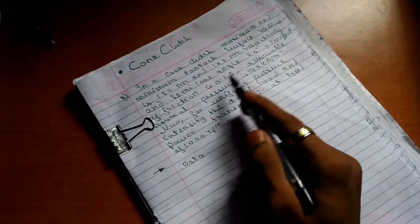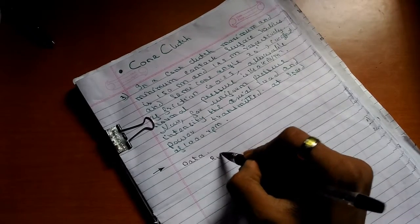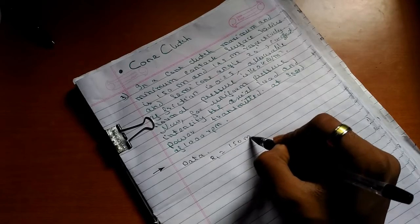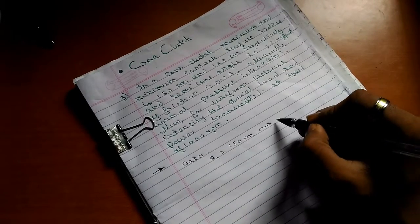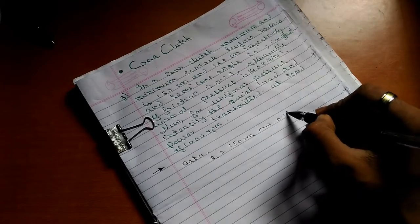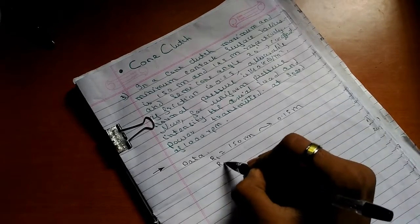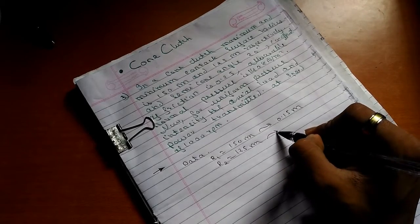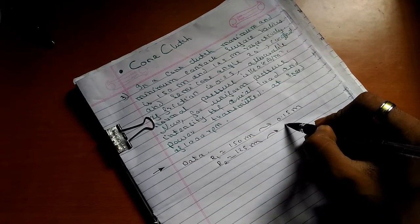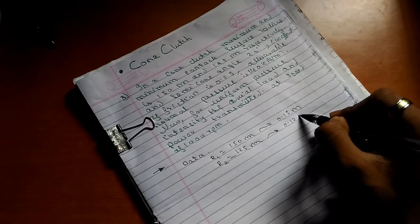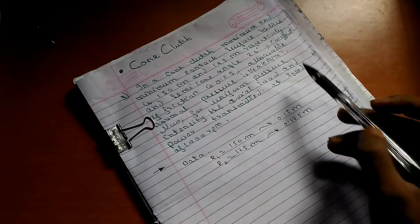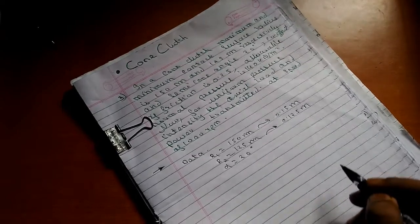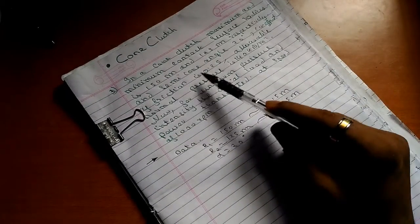Let's write the data. Maximum radius r1 is 150mm, which equals 0.15 meter. Minimum radius r2 is 125mm, which equals 0.125 meter. The semi cone angle alpha equals 20 degrees.